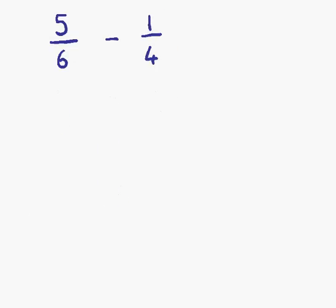Example number 10 is a subtraction. We have 5 sixths minus 1 quarter. As we said before, in order to add or subtract fractions we need a common denominator. One way of finding a common denominator is simply by multiplying the two denominators together — 6 times 4 is 24. However, that's not the lowest common denominator. The lowest number that both 6 and 4 go into is 12.